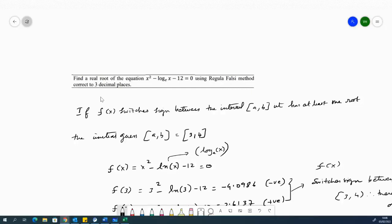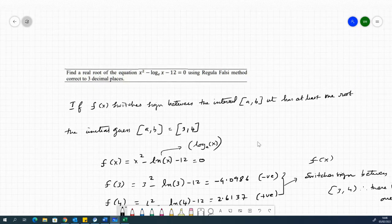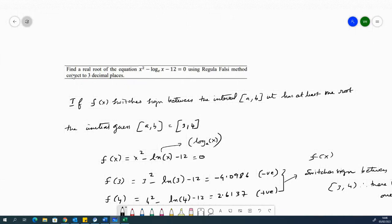So in this video, we're looking at finding a real root of the equation x squared minus the natural logarithm of x minus 12 equal to 0, using the regular falsi method, correct up to three decimal places.